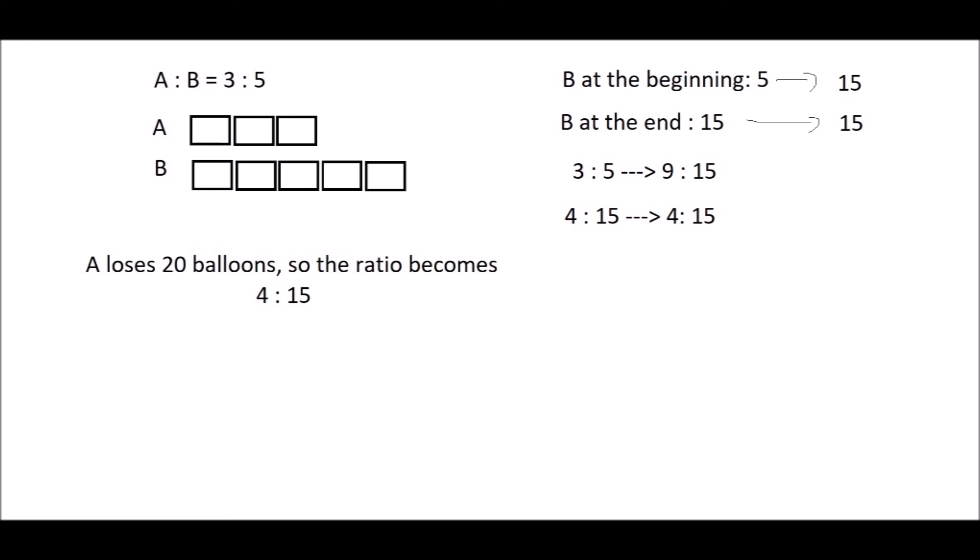In the picture we can cut each part into 3. How do we make it so that the ratio becomes 4 to 15? Well, we need to erase these 5 units in A, and therefore 5 units is 20, and 1 unit is 4.